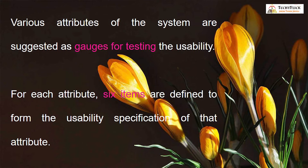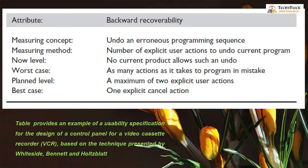Six items are defined to form the usability specification of that attribute, as derived in this table. The six items measured are: measuring concept, measuring method, now level, worst case, planned level, and best case.